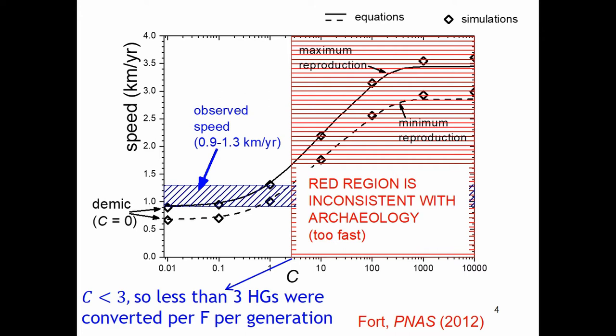We show two lines giving the spread rate of the Neolithic wave of advance as a function of the cultural transmission intensity parameter c. This parameter c has a simple interpretation: it is the number of hunter-gatherers converted into farmers per farmer per generation. For example, if c is 10, it means 10 hunter-gatherers were converted into farmers — via interbreeding or acculturation — per farmer per generation. The speed increases with increasing c, because more hunter-gatherers become farmers, so the spread is faster.